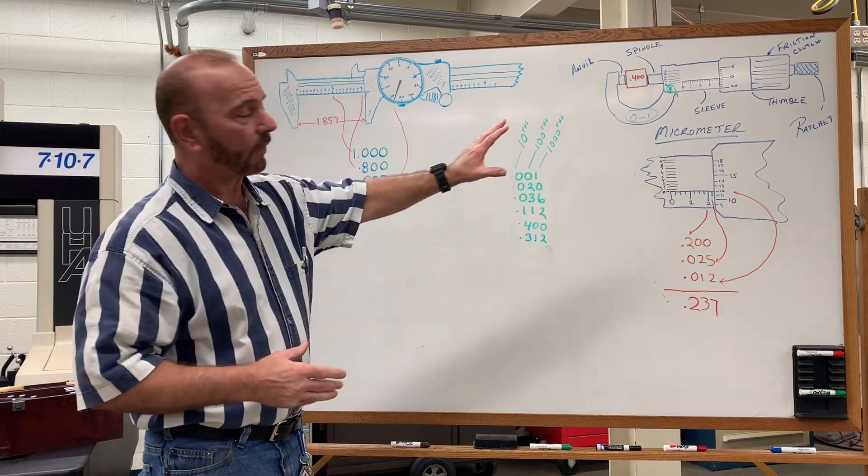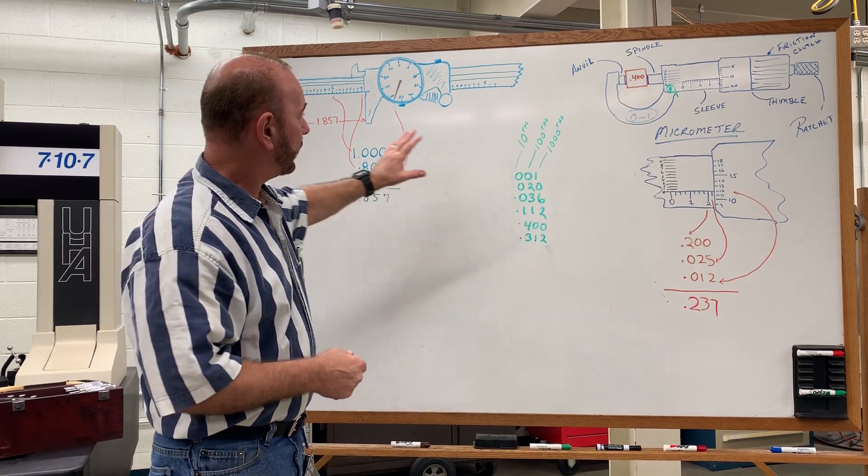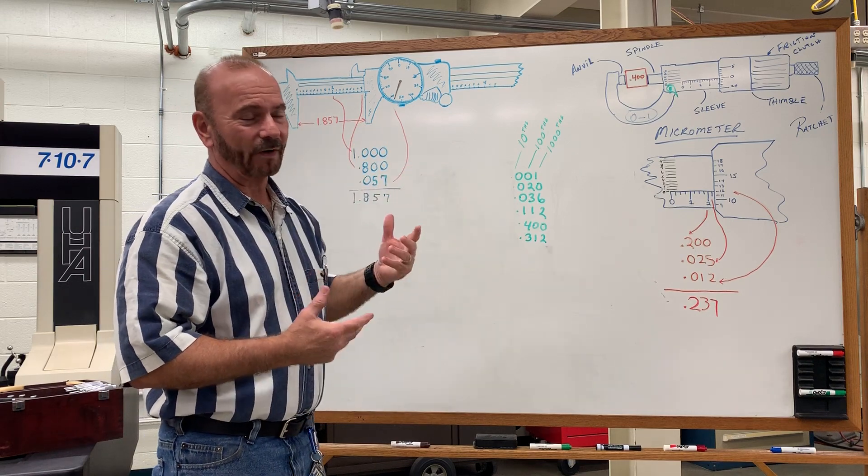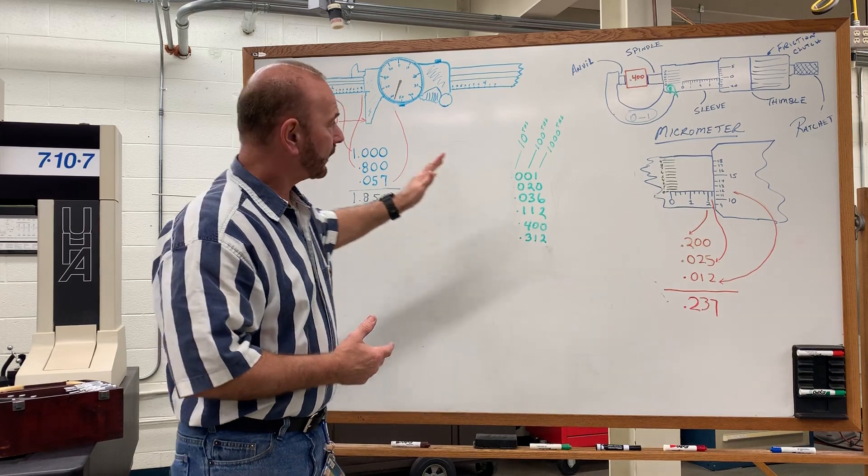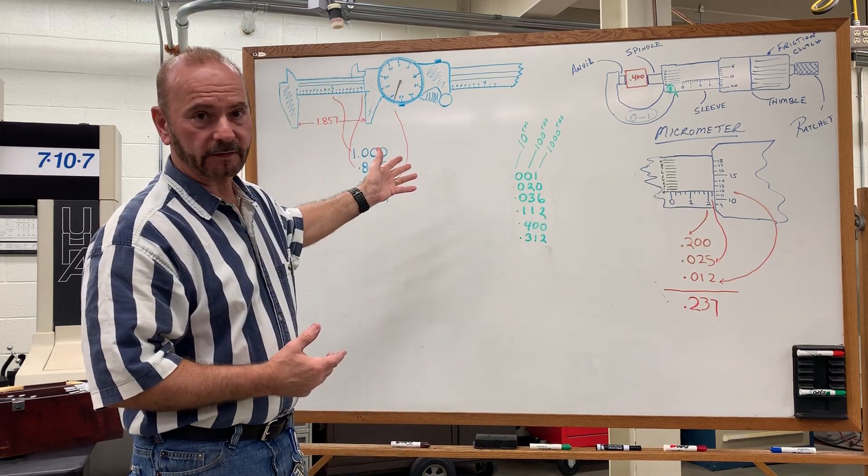Of the two, the micrometer is more accurate than a caliper, and when I say more accurate, most micrometers today can read to the fourth place decimal. Calipers can read to the three place decimal.